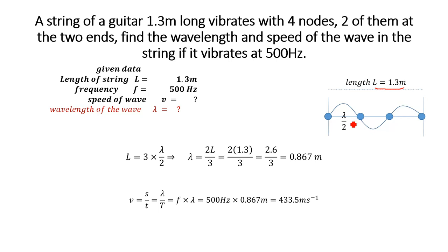In this case, this is full lambda from node 2 to node 3, and from node 1 to node 2, this is represented by lambda over 2, because this is half of this wavelength.